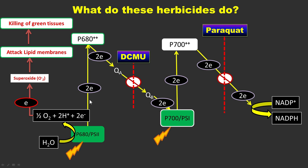This presentation covered how DCMU and paraquat act by blocking electron flow in photosynthesis and ultimately kill the plant.